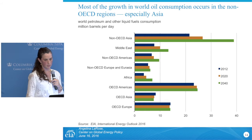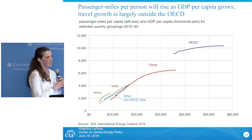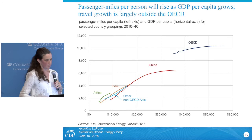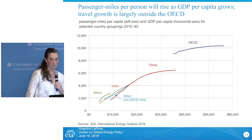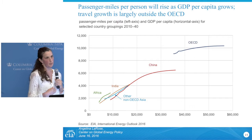Part of this growth is owing to the increase in transportation and passenger miles. With the growth in GDP, passenger miles correlate strongly. OECD regions are much more economically developed and thus have higher levels of personal mobility, but you can see that in China, India, and other non-OECD Asia, passenger miles are growing significantly.